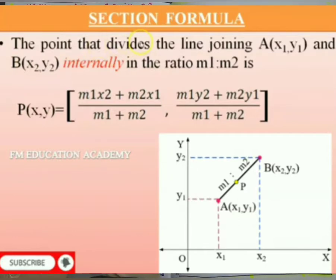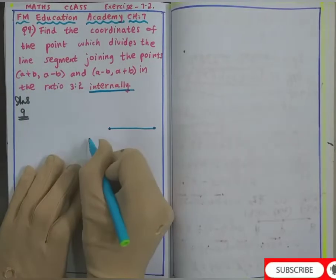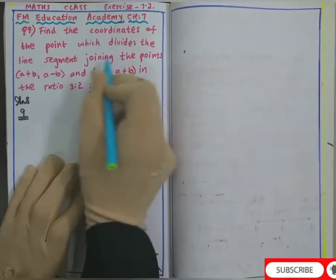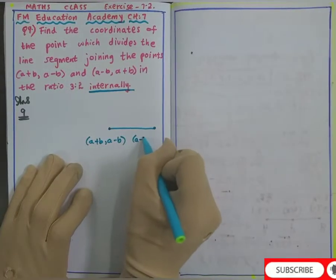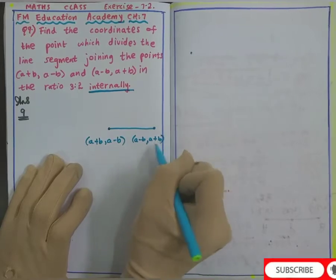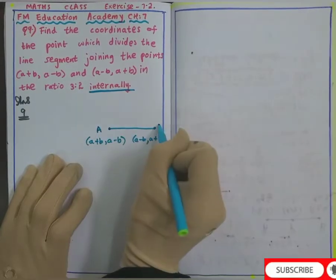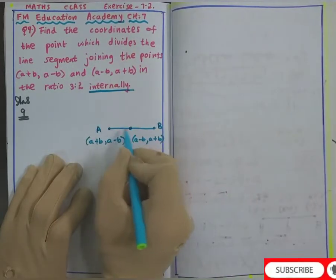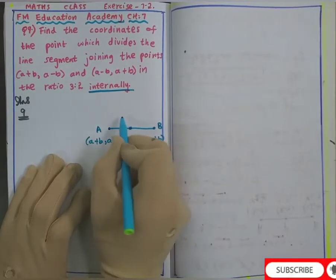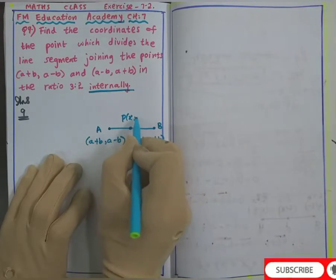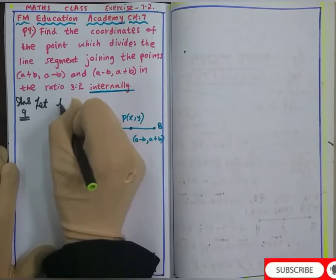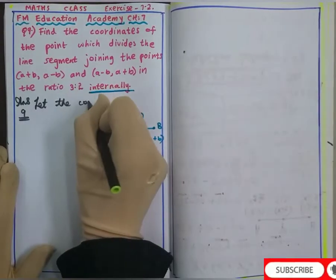The section formula is used when there are 2 points. This whole is one point which is (a+b, a-b) and this whole is another point which is (a-b, a+b). Let us suppose this is my point A and this is my point B. We have to find the coordinates of point P lying on this line.